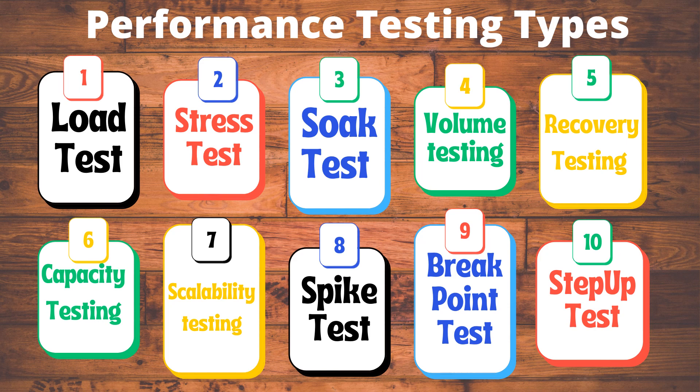To understand how software performs on user systems, different types of performance tests are applied. The first type is load testing, which measures system performance as the workload increases. That workload could mean concurrent users or transactions. The system is monitored to measure response time and system staying power as workload increases, within the parameters of normal working conditions.